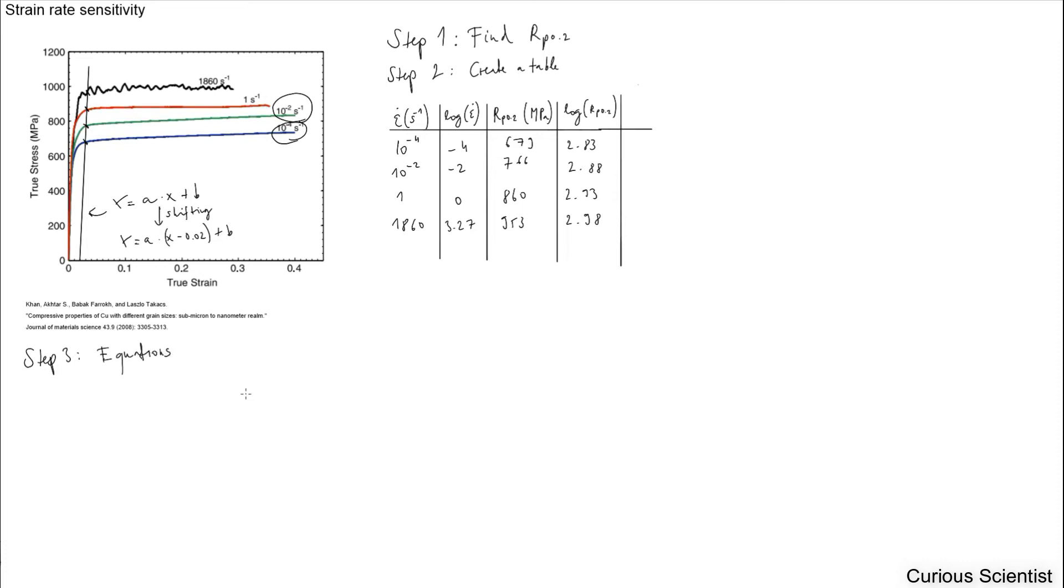For the strain rate sensitivity we have the following equation. The sigma, which can be the flow stress or the yield stress whatever you choose, is proportional to this value here. This is usually multiplied by some sort of constant which is dependent on the sigma, the stress value.